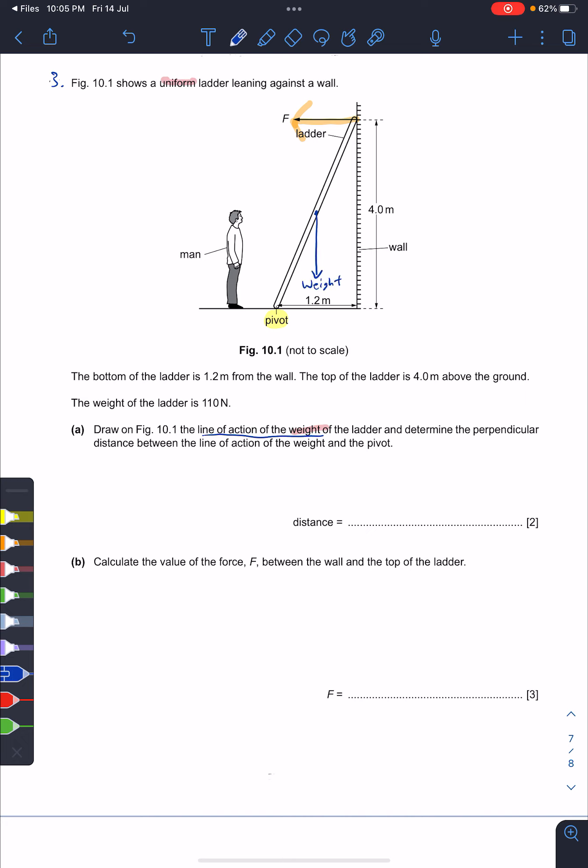The next one says determine the perpendicular distance between the line of action of weight and the pivot. So at this point, what you care about is this - you have pivot and the point where it goes down with weight. The only thing you care about here is pivot and the weight.